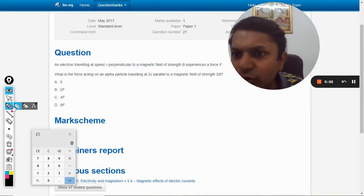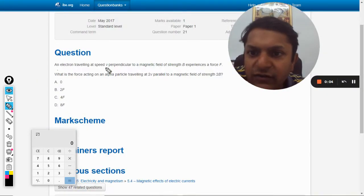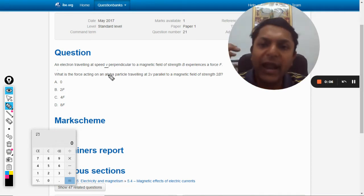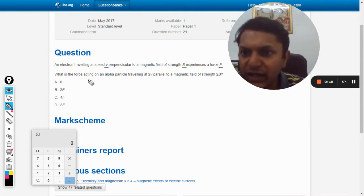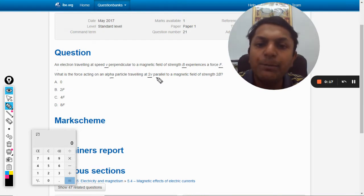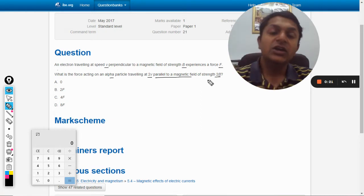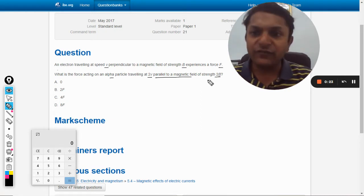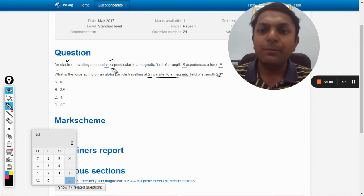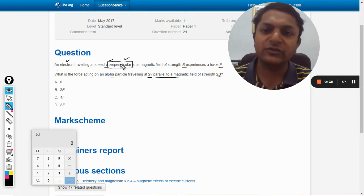Okay dear students, let us see this question. An electron traveling with speed v perpendicular to the magnetic field of strength B experiences a force F. What is the force acting on an alpha particle traveling at 2v parallel to the magnetic field of strength 2B? So there are a couple of changes. First of all, there is an electron traveling with speed v perpendicular - that is the most important word in this question - perpendicular to the magnetic field.